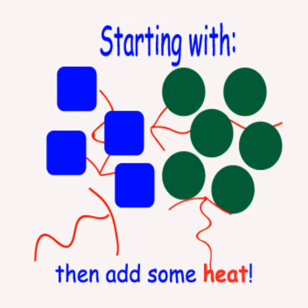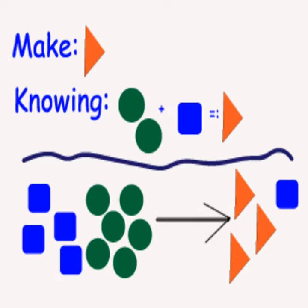So let's start with four blue squares and six green circles. Let's add some heat and start the reaction. We want to know how many orange triangles you can make, and you can see when we're done, we end up with three orange triangles, and we have one blue square left over.